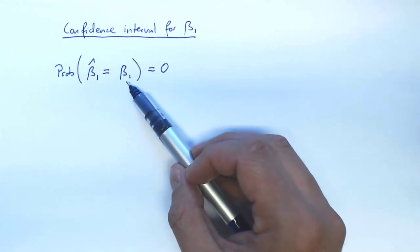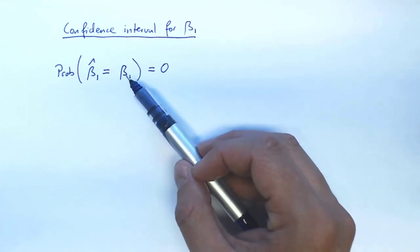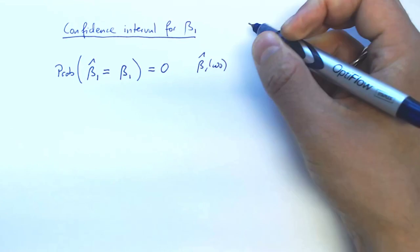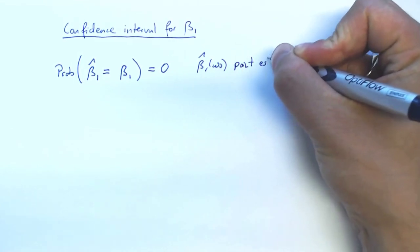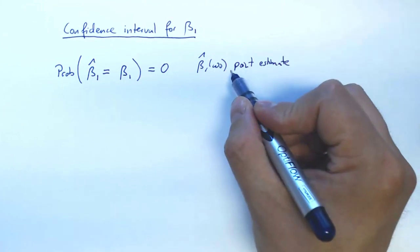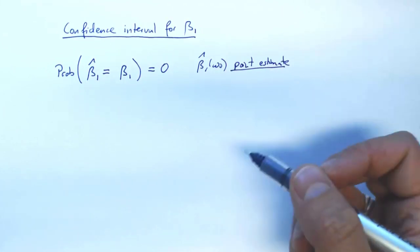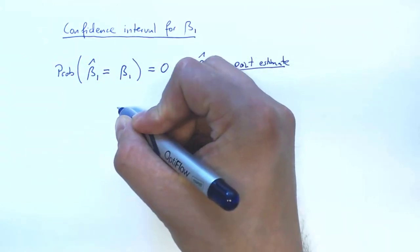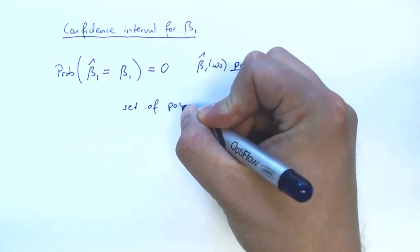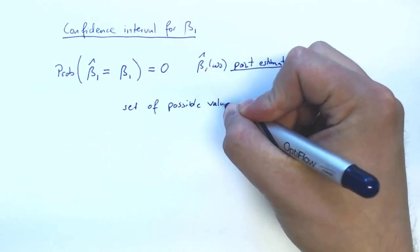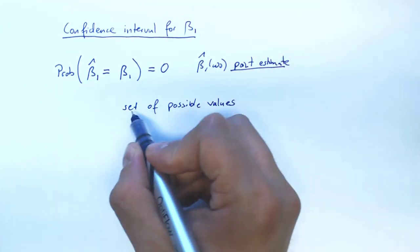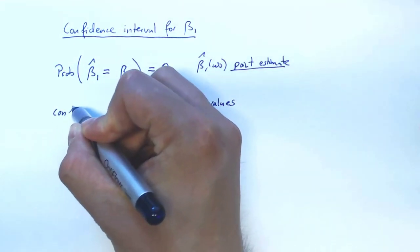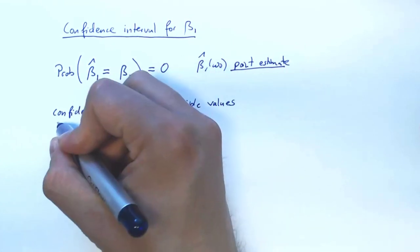And maybe it is just the wrong idea to try to give one precise number or to give a point estimate. Instead we could give a set of possible values, and such a set of possible values is called a confidence interval.